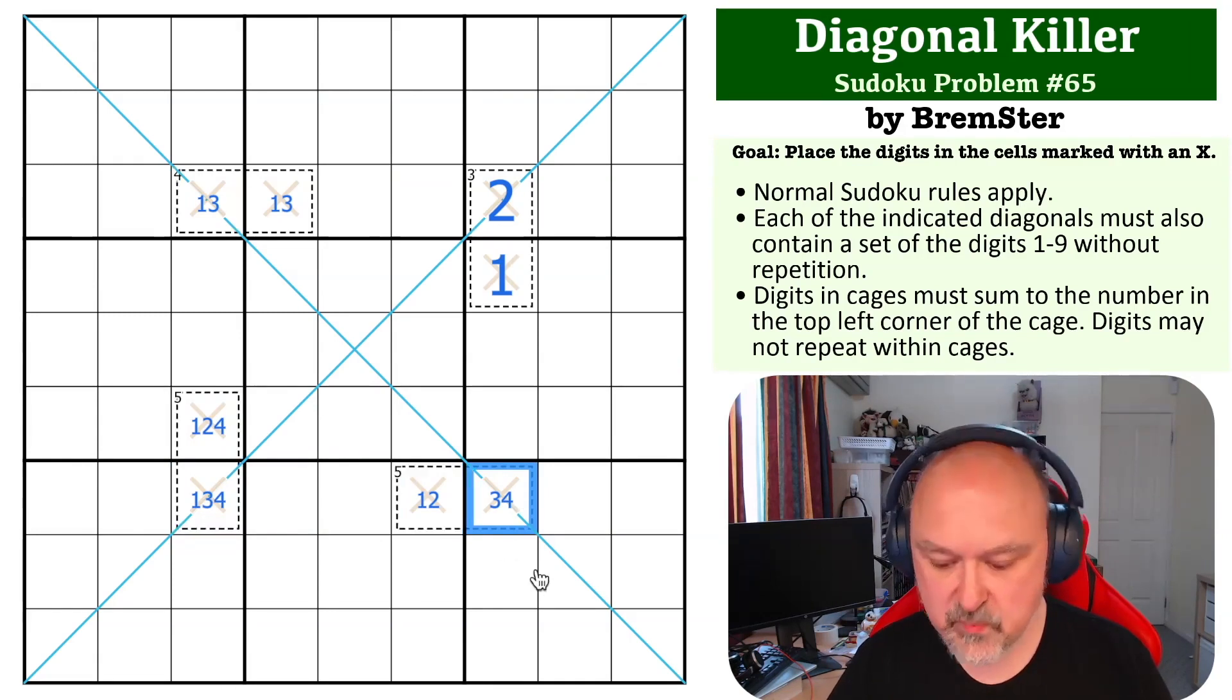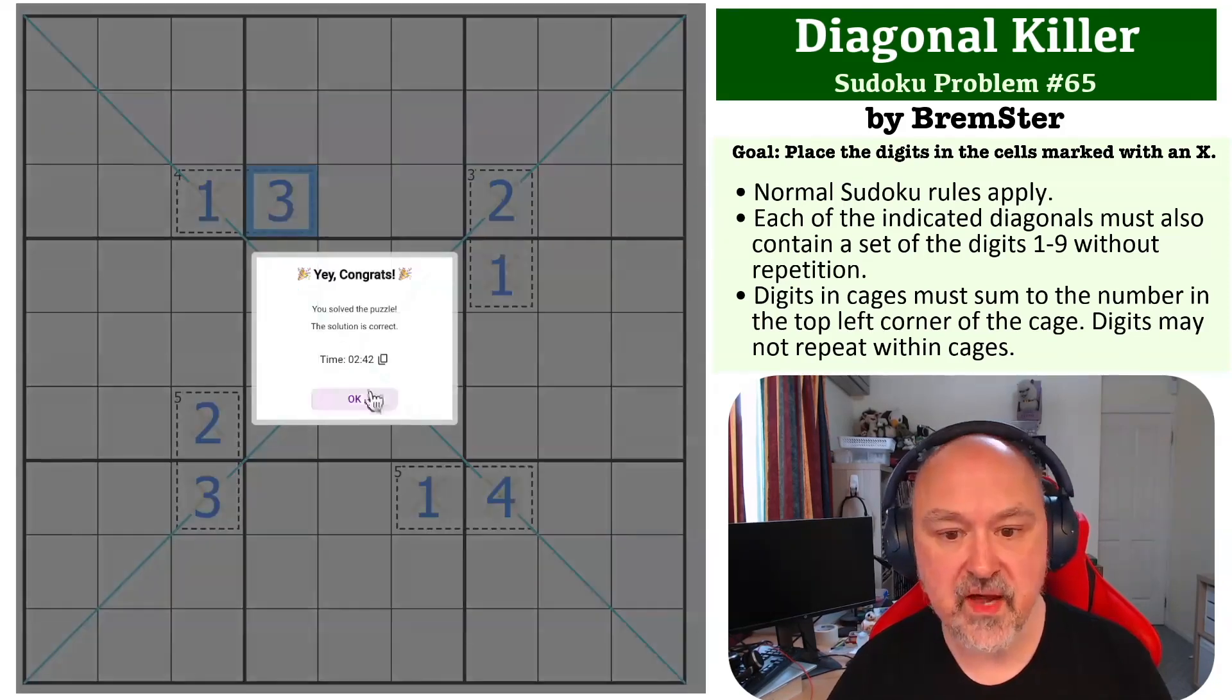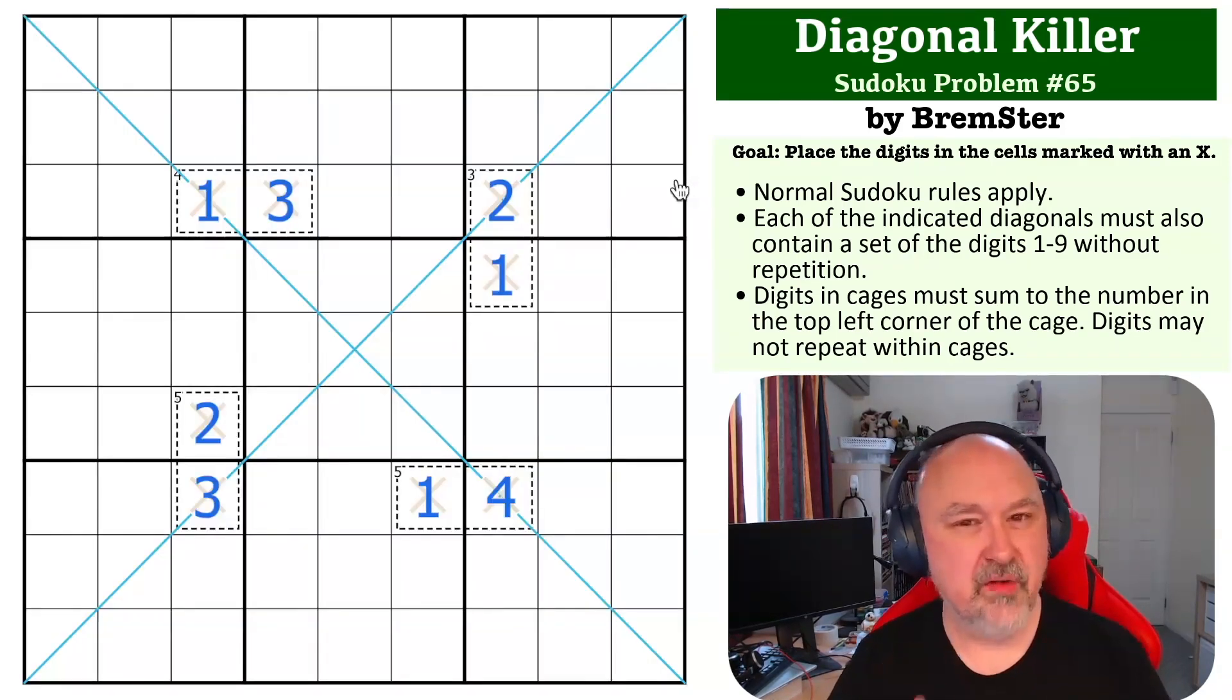So this one here has to be the four, which immediately makes this the one. This can't be four one, so this becomes three, this becomes two, this now has to be the one, and this has to be the three. And that's the solution to the problem. A lot of it comes from the fact that these digits all see each other.